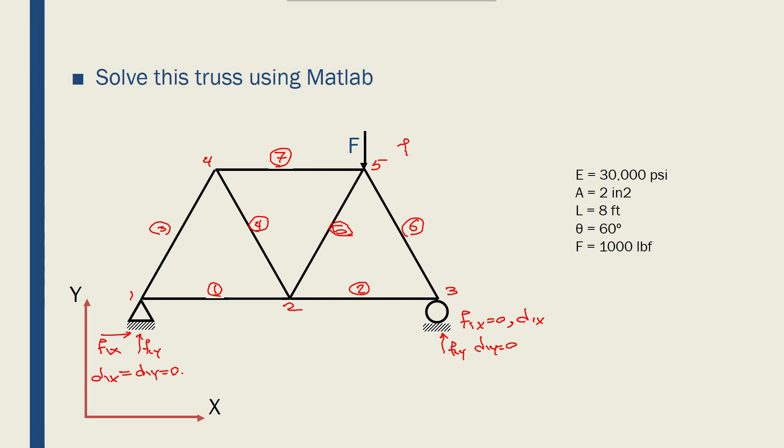I know here that f5x is 0, but f5y is minus 1,000 pounds from here. And all other nodes have fx is equal to fy is equal to 0 because there are no external forces applied to nodes 2 and node 4, but they have displacements that we want to solve for.